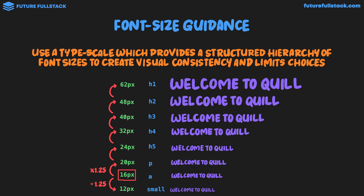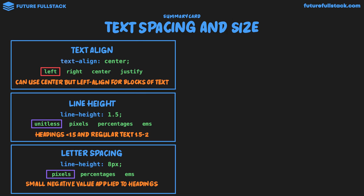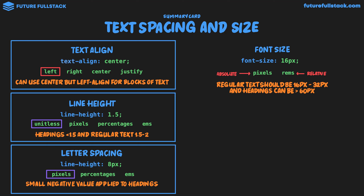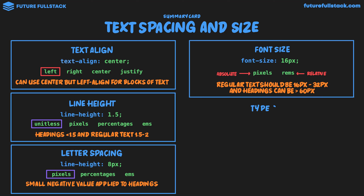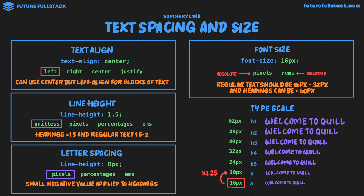Let's finish building the summary card for text spacing and size. Font size: values can be pixels or rems; pixels are absolute, rems are relative; we'll use pixels for now. Design guidance: regular text should be 16–32px, headings greater than 60px. For a type scale, we start with a base unit like 16px, apply a scaling factor like 1.25 to get the next value (20px), continue upward for larger sizes, and then assign specific sizes to HTML elements.